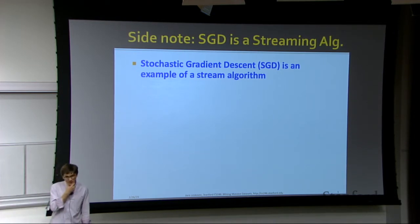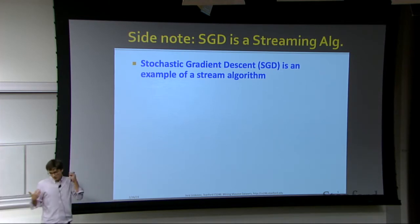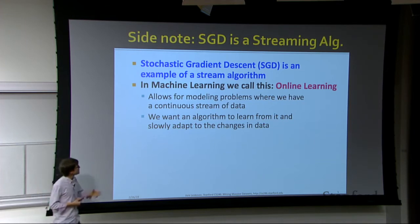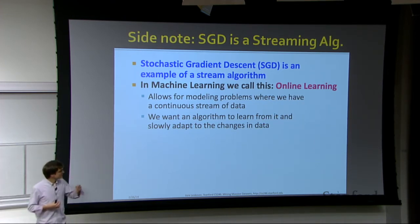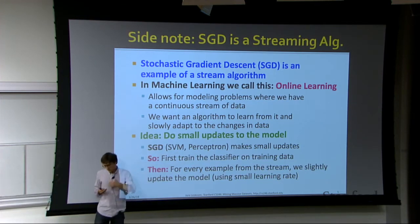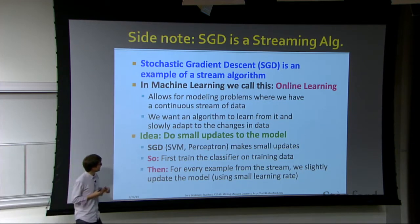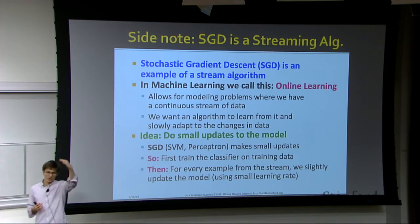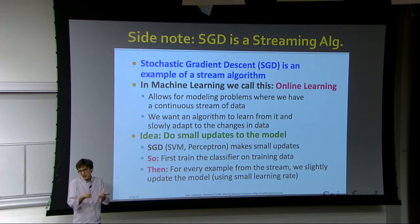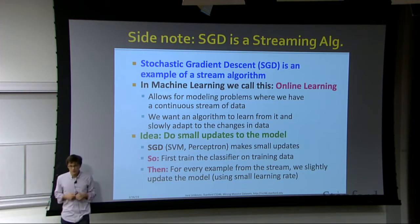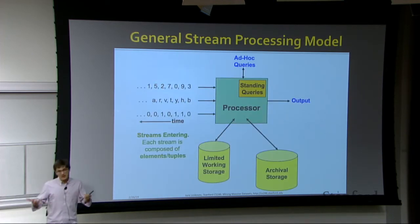Streaming algorithms can be thought of as online algorithms. When we talked about optimization and stochastic gradient descent, that is an example of a streaming algorithm. In machine learning we call it online learning — it allows us to update the model on the fly as new data comes in. The algorithm adapts itself to changes in the data by making small updates as new data arrives, without requiring multiple passes over the dataset.